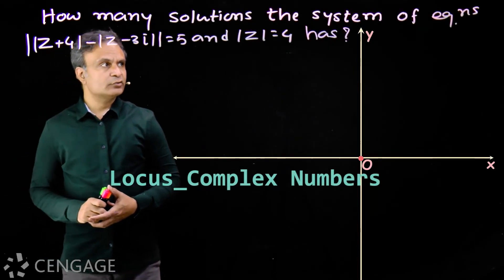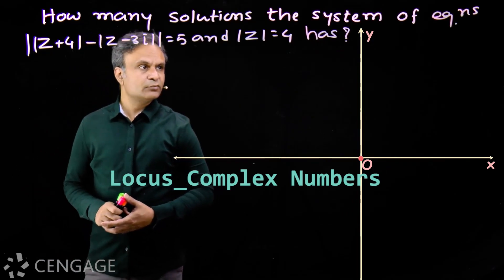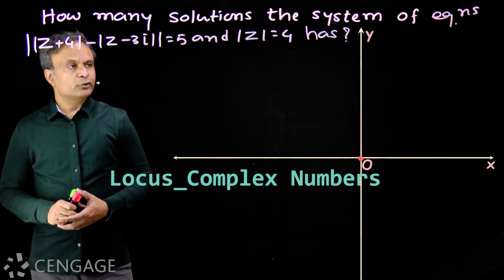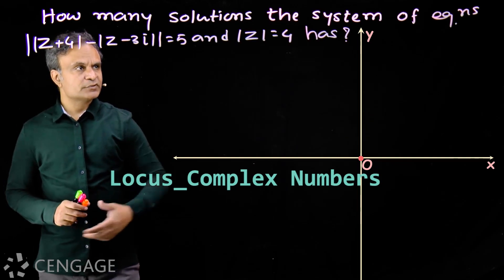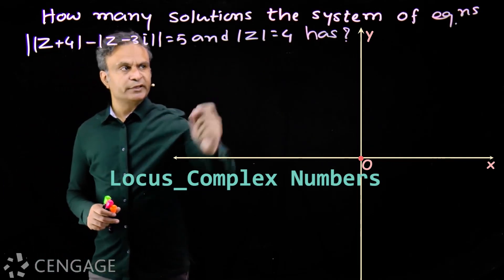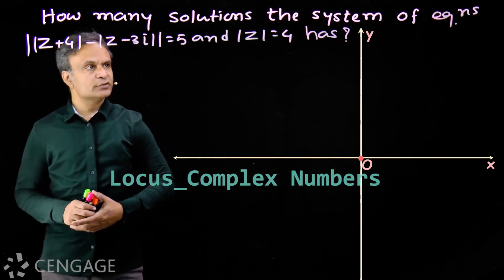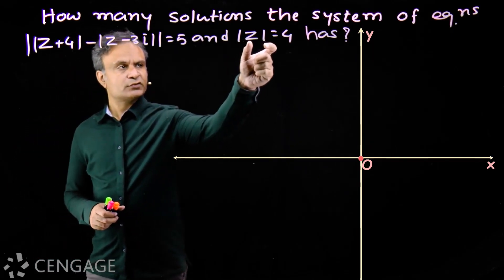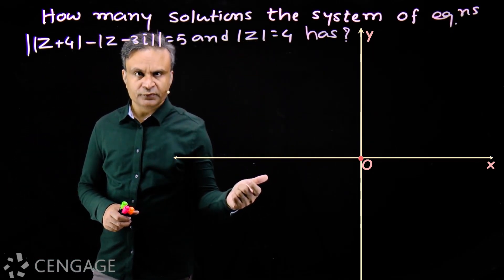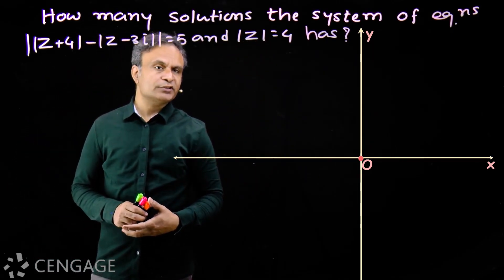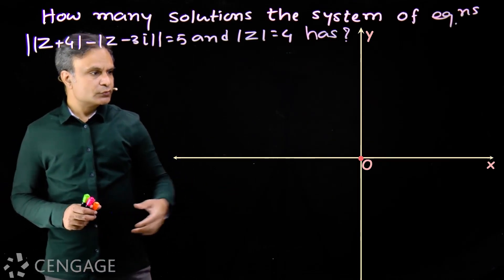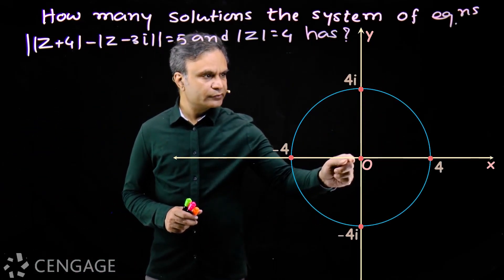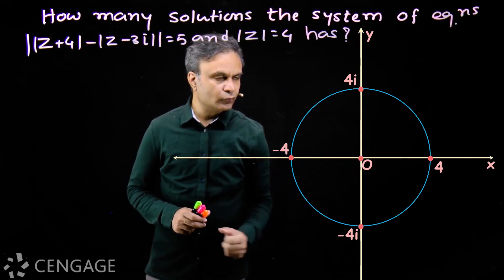Let's solve this question: how many solutions does this system of two equations have? The first equation is the modulus of z equal to 4. The locus of z for this equation will be a circle whose center is the origin and radius is 4. We draw this circle on the Argand plane with center at origin and radius 4.